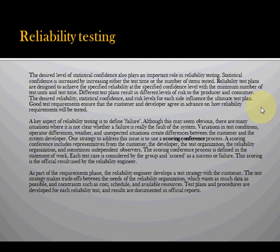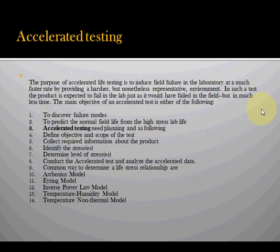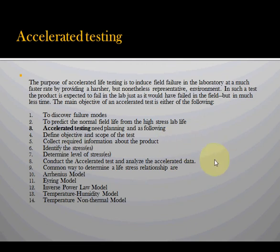We need to define what the failures are. Sometimes we have a scoring mechanism depending on the severity of the failure encountered. Accelerated life testing: the purpose is to induce field failure in the laboratory at a much faster rate by providing a harsher but representative environment. The product is expected to fail in the lab just as it would have failed in the field but in much less time. The main objectives are to discover failure modes and predict the normal field life. Accelerated testing planning steps include: define the objective and scope, collect required information, identify the stresses, determine the level of stress, conduct accelerated tests and analysis, then analyze the accelerated data.